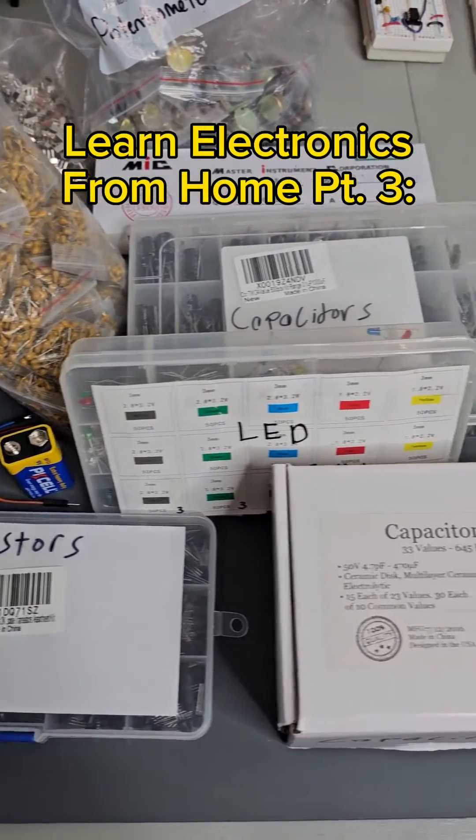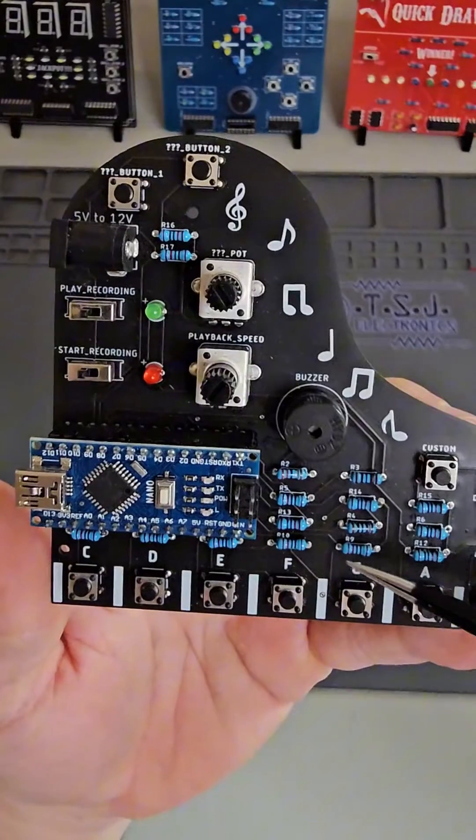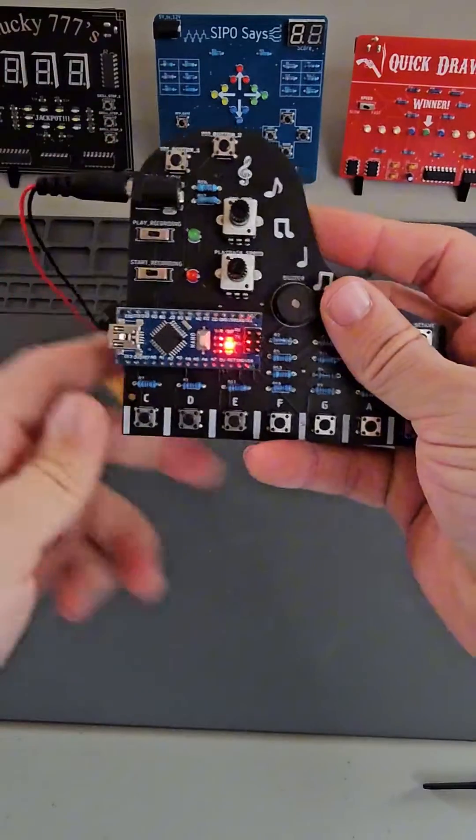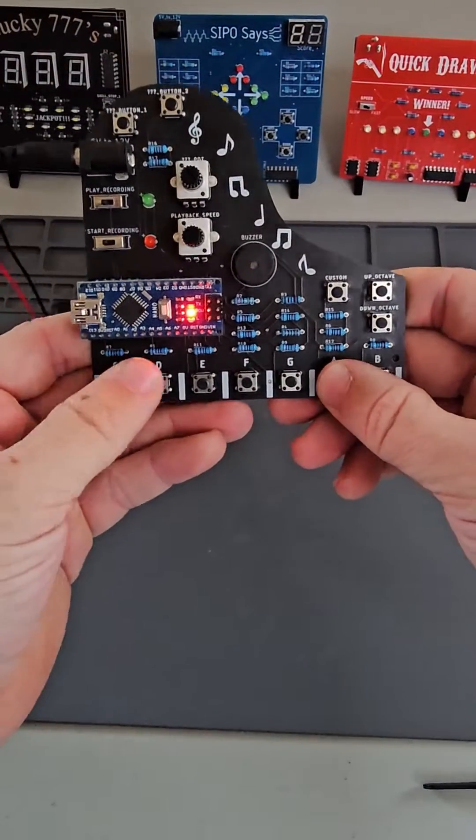Learn Electronics From Home Part 3: Basic Components. Components are individual pieces that perform a set function. If you put many components together and apply a power source, you get a working circuit.